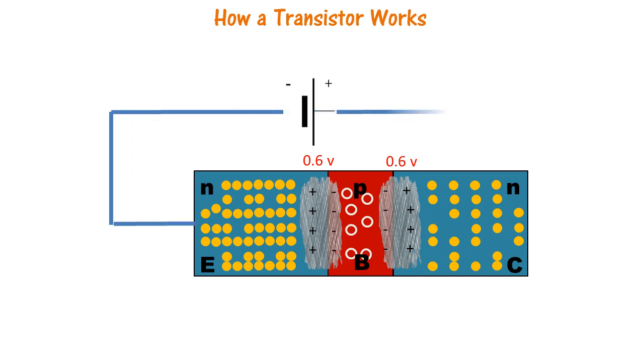Now if we connect a battery across the NPN transistor, we see that nothing really happens. One may argue that this emitter is in a forward bias position and it should push the electrons and cause the flow of current.